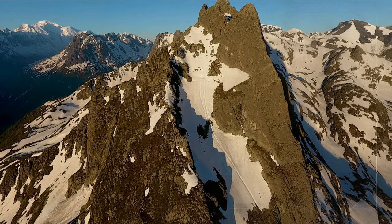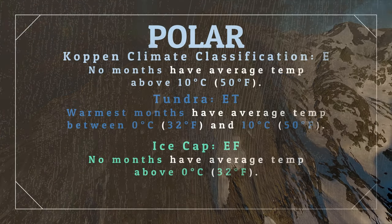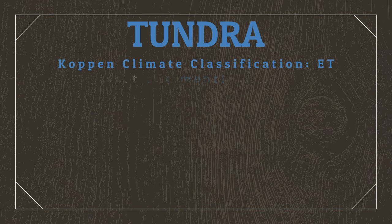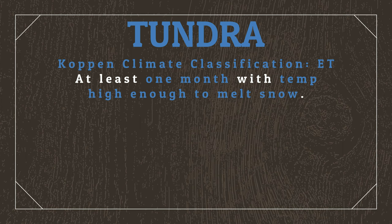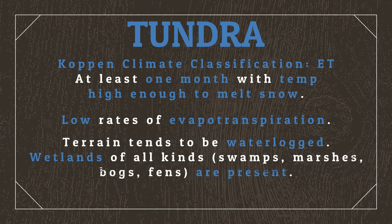Ice cap climates never have any monthly average temperatures above 0. These climates can also exist at high altitudes, especially within the temperate band. And though their climate conditions are identical to the above classifications, polar climates that exist due to elevation are referred to as alpine climates, for the sake of differentiation. Tundra climates have at least one month where temperatures are high enough to melt snow, though the generally low temperature makes rates of evapotranspiration so low that terrain tends to be waterlogged, allowing wetlands of all kinds to form even in places that receive low enough precipitation that they'd be considered deserts if they were at lower altitudes.